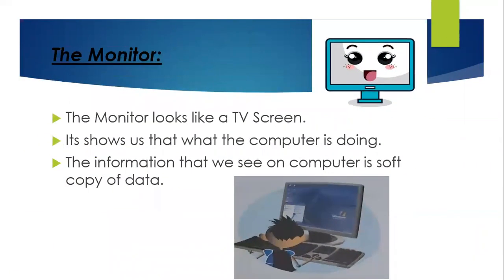Now I'm going to tell you about the monitor. A monitor looks like a TV screen — it shows us what the computer is doing. Whatever you are doing on the computer, whether playing a game, typing, or drawing a picture, you can see it all on the monitor. The information that we see on the computer is called a soft copy of data. Now look at the picture below — the boy is watching the information shown on the monitor.